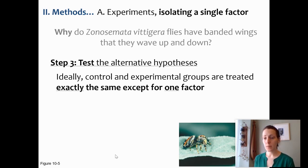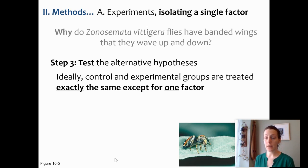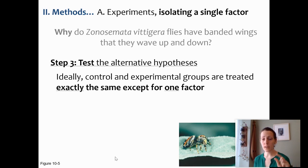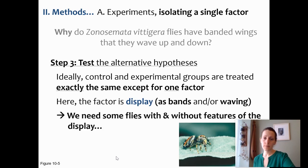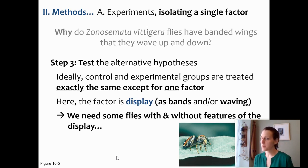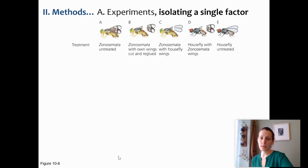We want to manipulate just a single factor in our experiment. In this case, we have two things we're interested in: wing waving and wing bandedness. So we want an array of experimental treatments where each one manipulates just one part — either bandedness or waving. In our natural population, we don't have flies with unbanded wings or that don't wave, so we need to be a little more creative to design these treatments.